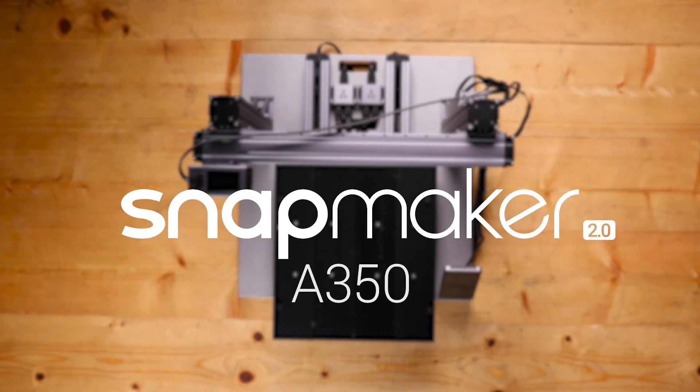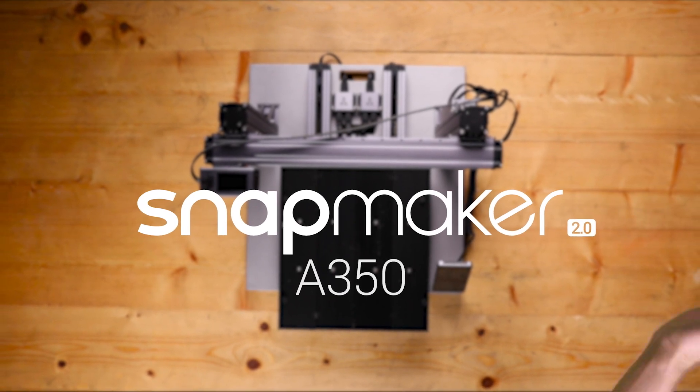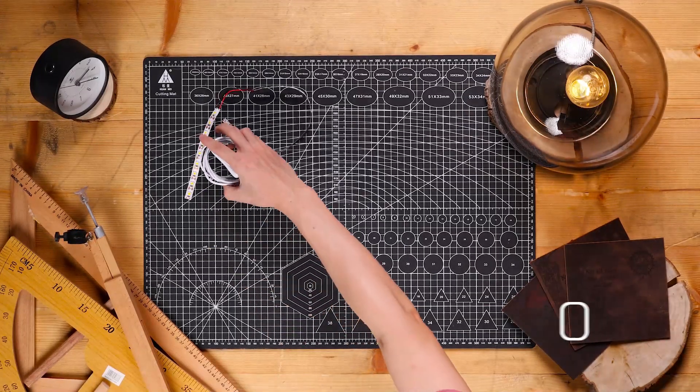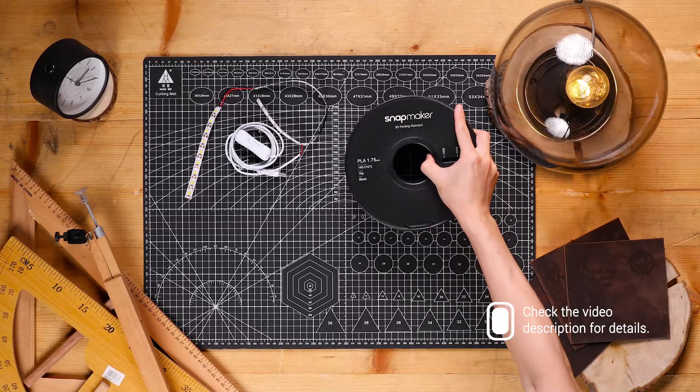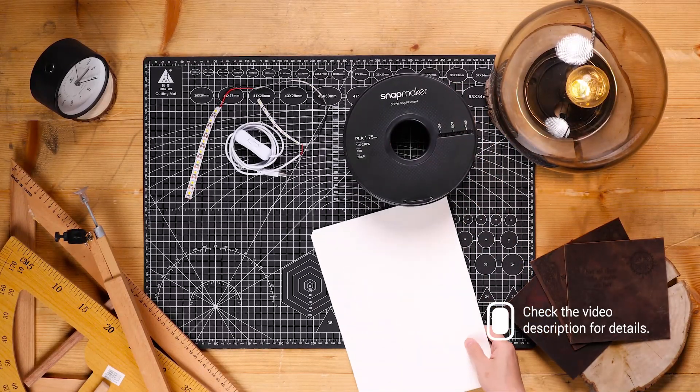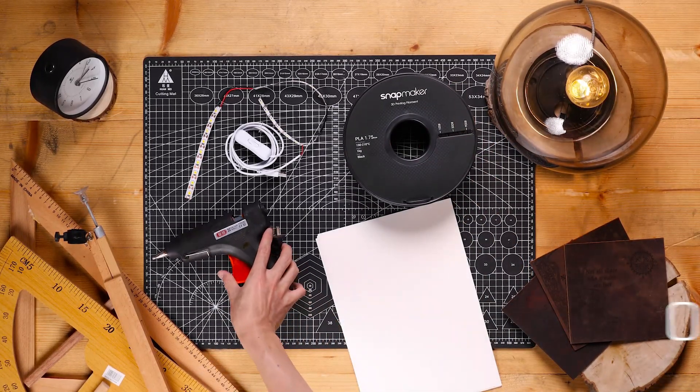To do this project, you need to use a Snapmaker 2.0 3-in-1 3D printer, an LED strip with a switch, a roll of PLA filament, several pieces of A4-sized paper, and some hot melt glue.